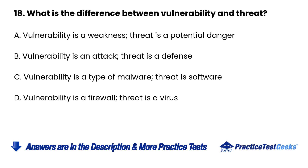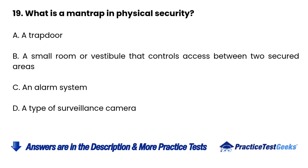Question 18: What is the difference between vulnerability and threat? A. Vulnerability is a weakness; threat is a potential danger. B. Vulnerability is an attack; threat is a defense. C. Vulnerability is a type of malware; threat is software. D. Vulnerability is a firewall; threat is a virus.